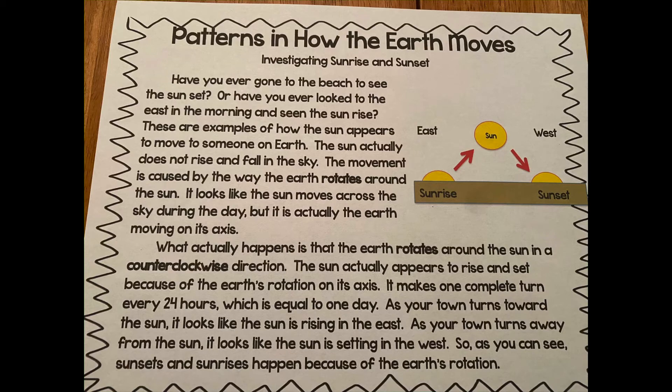As your town turns toward the sun, it looks like the sun is rising in the east. As your town turns away from the sun, it looks like the sun is setting in the west. So as you can see, sunsets and sunrises happen because of the earth's rotation.